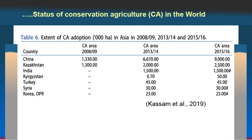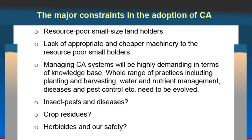Extent of conservation agriculture in Asia: China has the highest area at about 9 million hectares, Kazakhstan 2.5 million hectares, and India just 1.5 million hectares. Other countries include Kyrgyzstan, Turkey, Syria, Korea DPR and others. India's position is still not very good — much less than China, even less than Kazakhstan. We need to look into the major constraints why adoption of conservation agriculture in the country is slow.